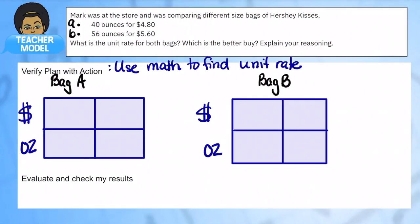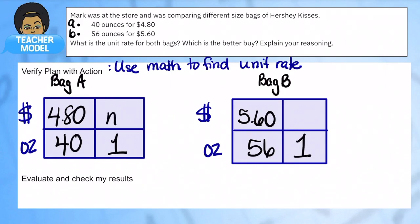Let's put this plan into action. I have bag A and bag B ready. We're trying to figure out the lowest price per ounce. Notice that's how I have my units: prices and then ounces. I'm going to put in my information for bag A, which is $4.80 for 40 ounces. Bag B is $5.60 for 56 ounces. We want to figure out what is the price per ounce when there is one ounce.